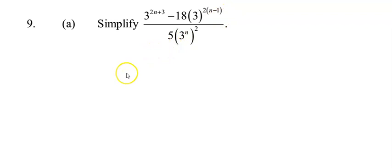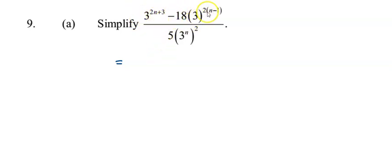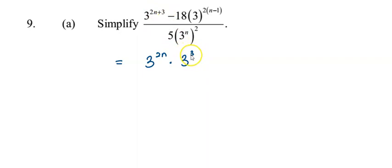Another example: I need to simplify this index expression. I have three terms. The first term at the numerator is 3 to the power of 2n plus 3. I also have 3 to the power of 2n. I can see that I have 3 to the power of 2n in the numerator, and below also I have 3 to the power of 2n. I'm going to split the first term into 3 to the power of 2n multiplied by 3 to the power of 3, minus 18 times 3 to the power of 2n minus 2.